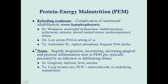Noma is something we never see in developed countries, but it is related to protein energy malnutrition. It's a rapidly progressive, necrotizing, infectious, ulcerating, gingival, and perioral inflammation seen almost exclusively in PEM patients, typically preceded by a more innocuous infection or debilitating illness. Symptoms include gingivitis, halitosis, fever, and anemia, with the necrotization progressively worsening. Treatment requires prompt local wound care, antibiotics — penicillin and metronidazole for broad-spectrum coverage — and treatment of the underlying malnutrition.